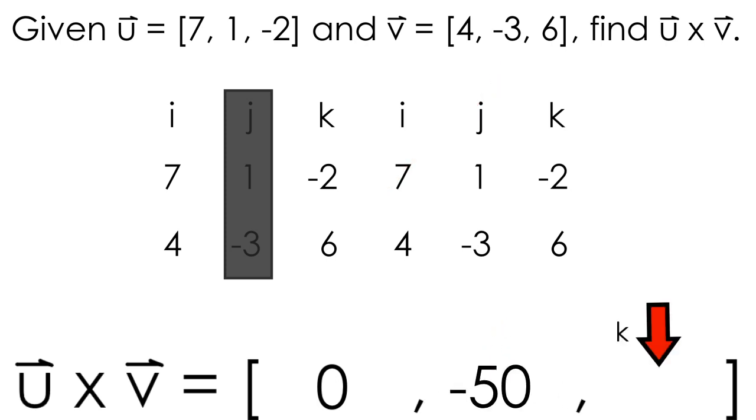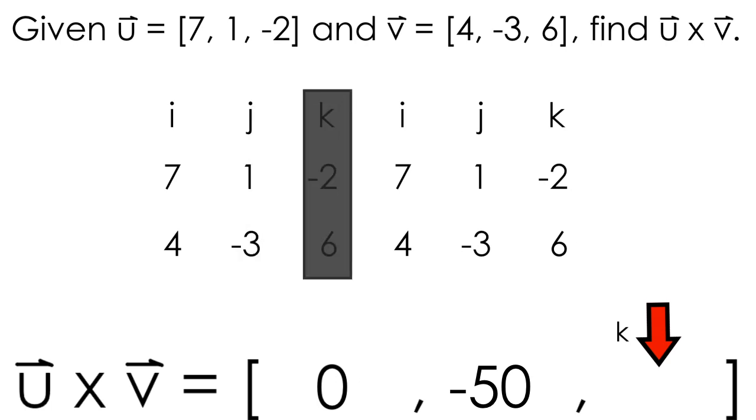To find the final component, we can repeat this process, cover up our k column in our chart, and apply the same multiplication process. Multiplying on a diagonal from upper left to lower right gives us 7 times negative 3, and we subtract 4 times 1, or the multiplication of the lower left to the upper right. All of this results in negative 25 as the final part of our cross product.